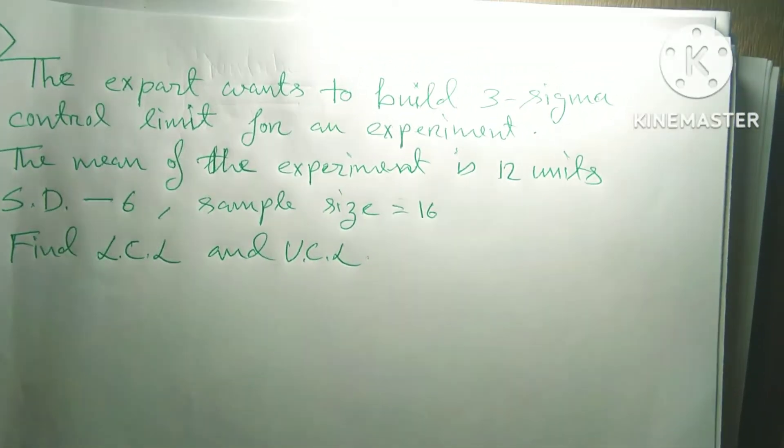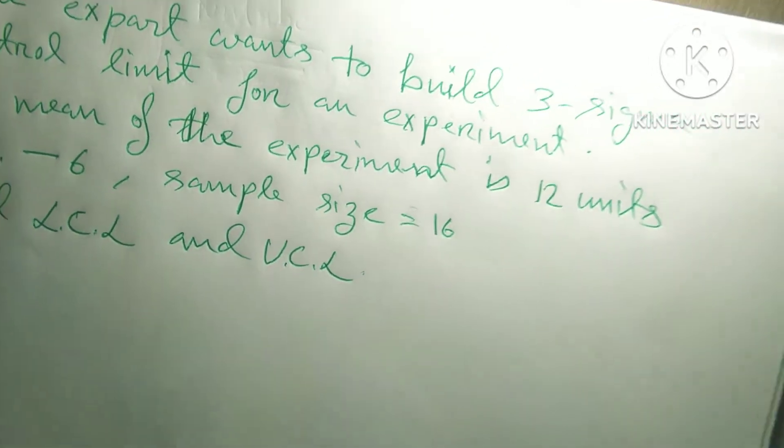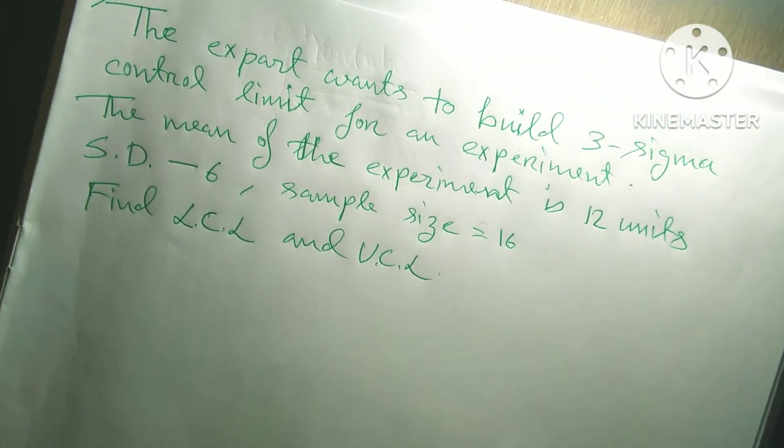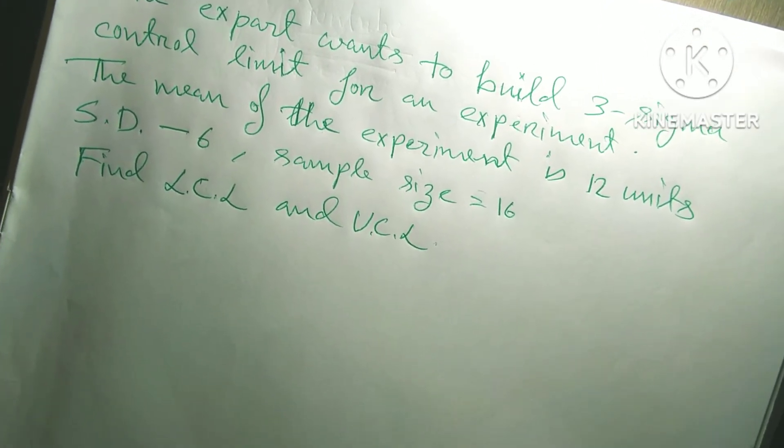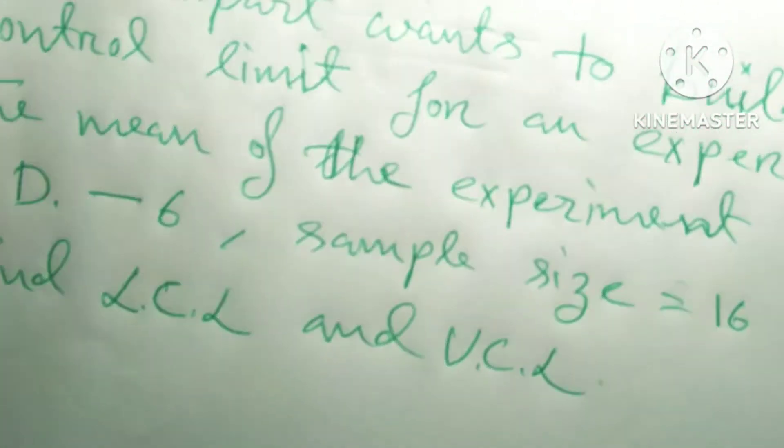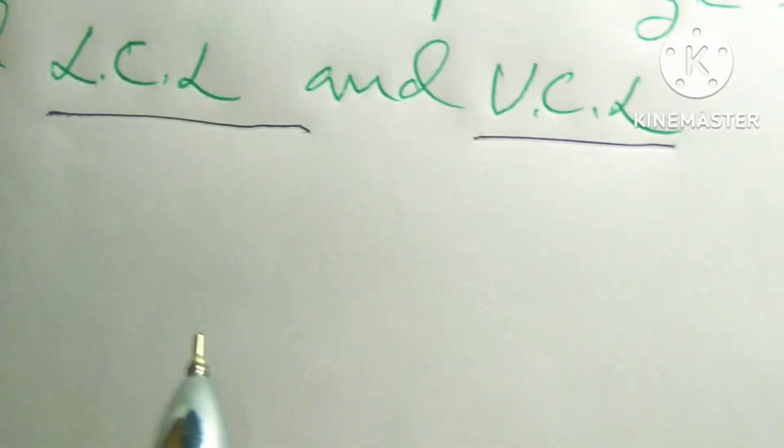The expert wants to build a 3 sigma control limit for an experiment. The mean of the experiment is 12 units. Standard deviation is equal to 6. Sample size is equal to 16. So find lower control limit and upper control limit.